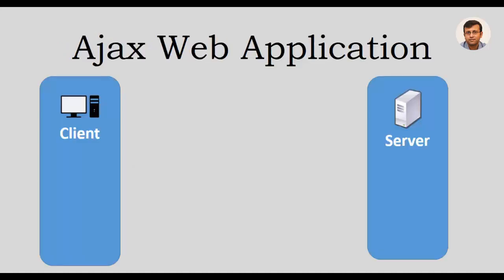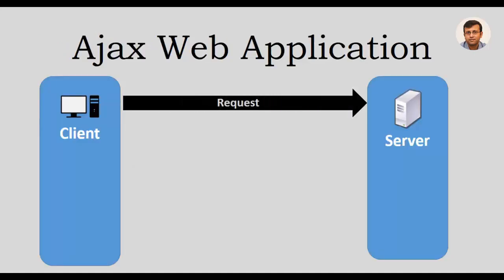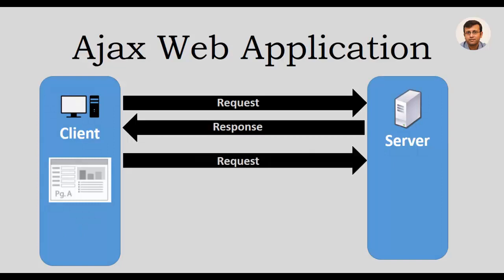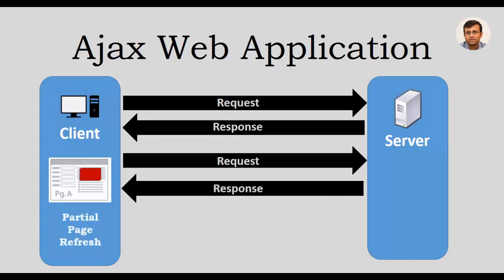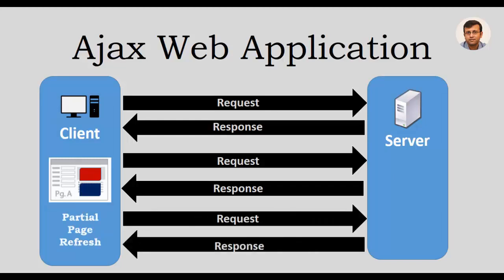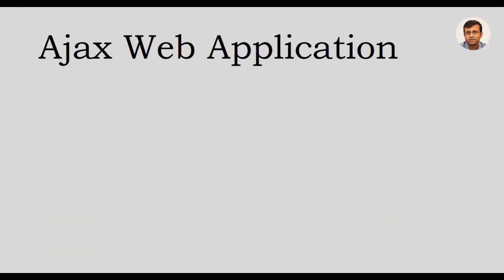In an Ajax web application, a client sends a request and the response is sent back to the client where the full page has to be loaded initially. When the client sends the request again, the server responds back and only a partial page is refreshed. The client may again send the request and the server may again respond back with a partial page refresh.